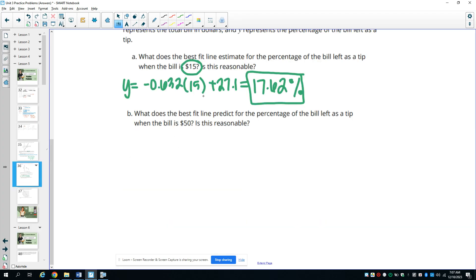So then B said, what does the line of best fit predict if the bill is $50? So then we would plug this in again and plug in 50 and see what we get here. So then just plug this into your calculator. So do negative 0.632 times 50 plus 27.1. And this is giving you negative 4.5% for the tip. And this does not make sense. You can't tip a negative amount.